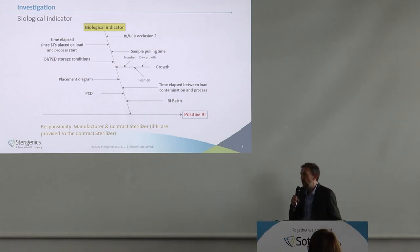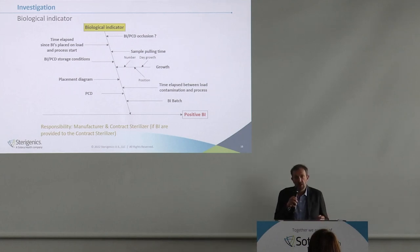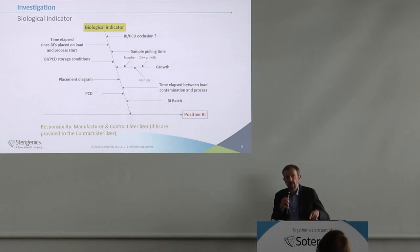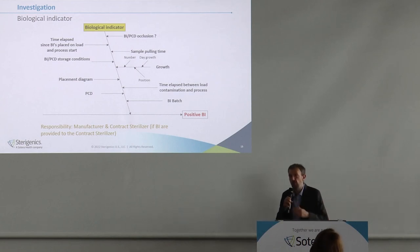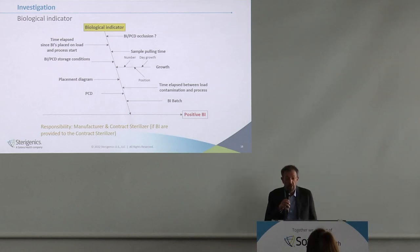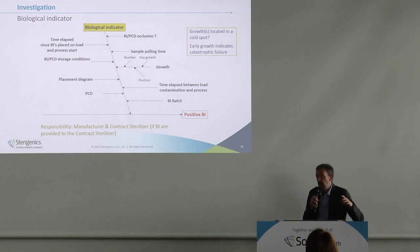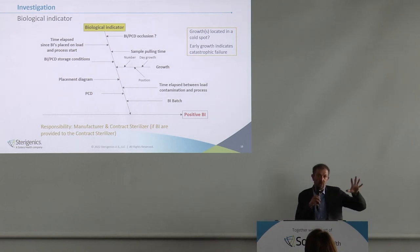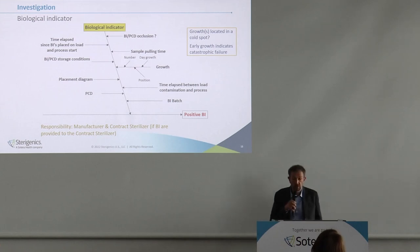Within our network at Sterigenics and Nelson Labs we have a centralized database to track all batches giving unexpected results, so we can identify if it's the same BI batch causing issues, then isolate, quarantine, and remove that batch from use. Manufacturing conditions may vary, and we need traceability of which position showed growth so we can trace it back to the pallet location and the conditions around that pallet.